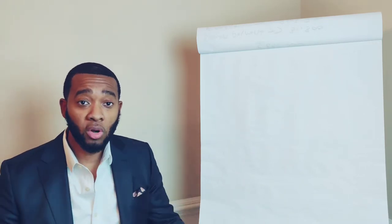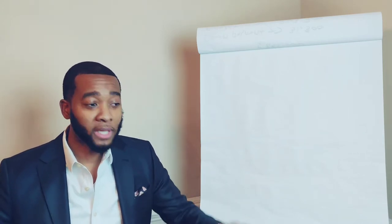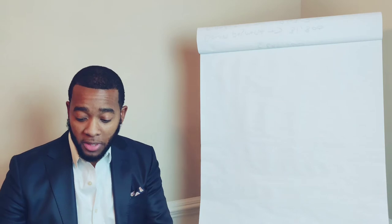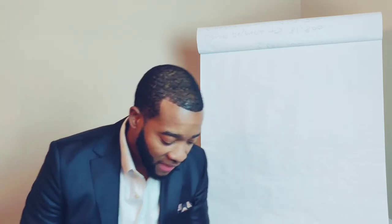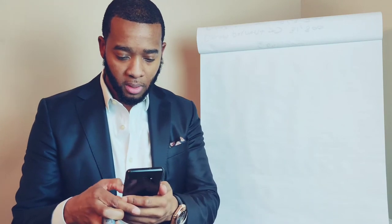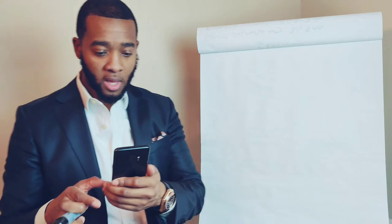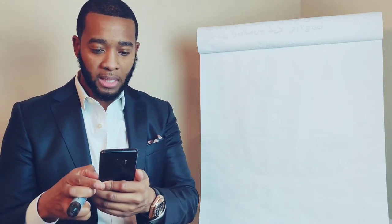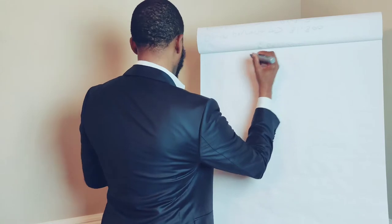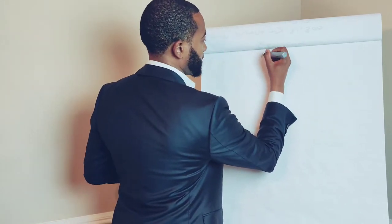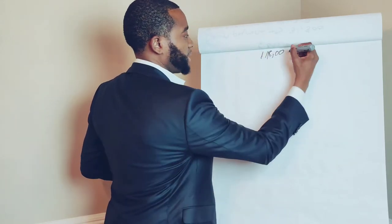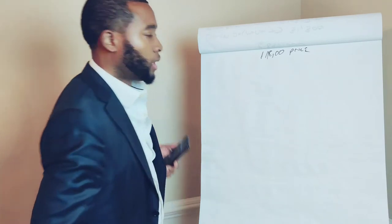I found a property that's currently on the market right now. If you want to go look at it you can, but there are a lot of other properties out there you can also take advantage of. This property is at 870 Mason Turner — it's a condo in Atlanta, Georgia, and the asking price right now is $118,000.